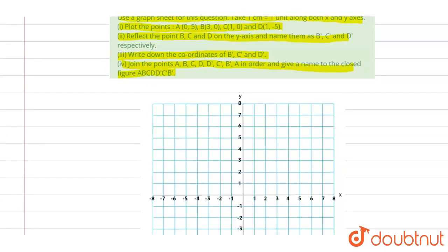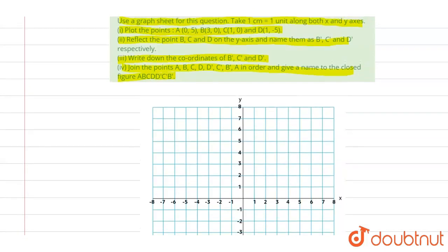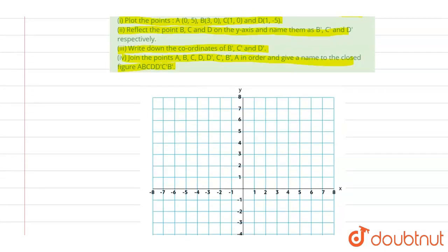So we have a graph paper and you have to take 1 cm for 1 unit in both the x and y axis. The first point is A, 0, 5. 0, 5 is here. So this is A, 0, 5.